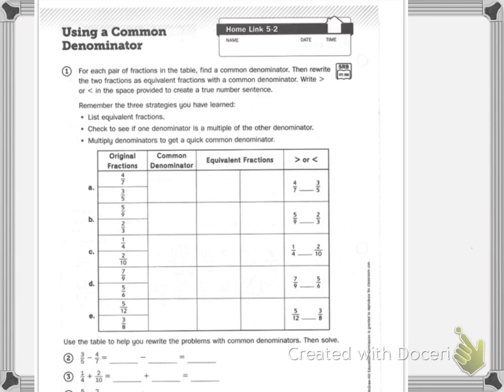Then rewrite the two fractions as equivalent fractions. Remember, equivalent means equal with a common denominator, so they need the same denominator. Write greater than or less than in the space provided and then create a true number sentence.